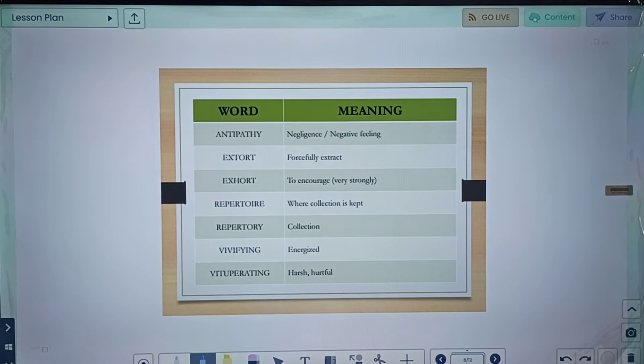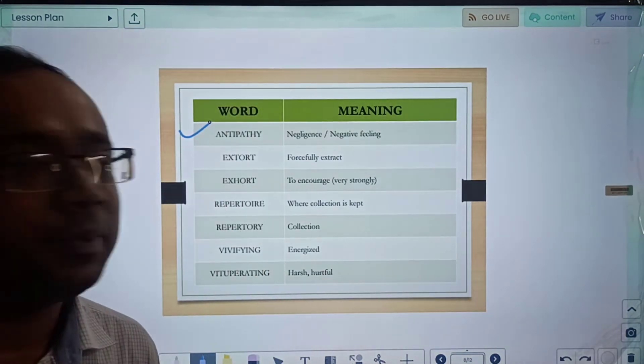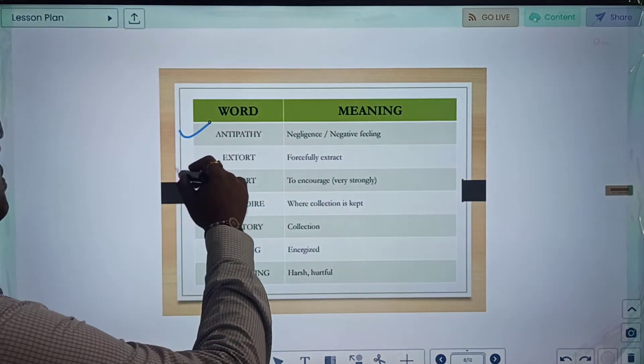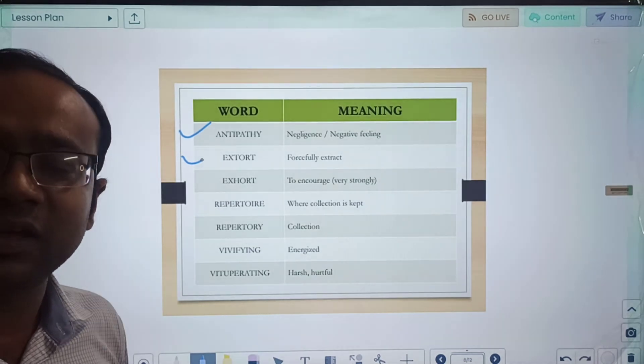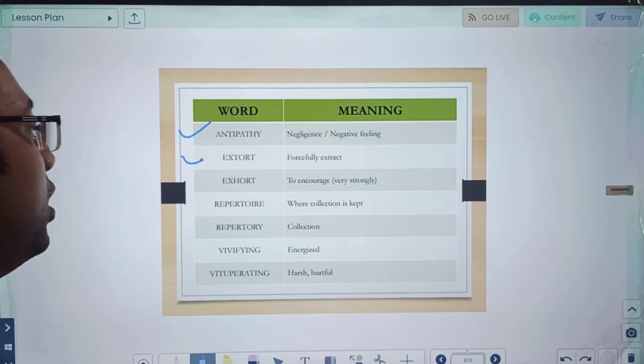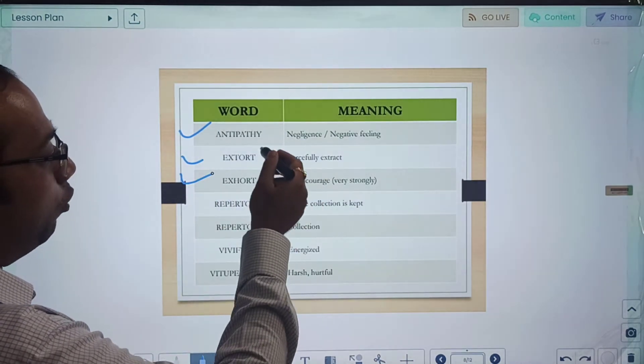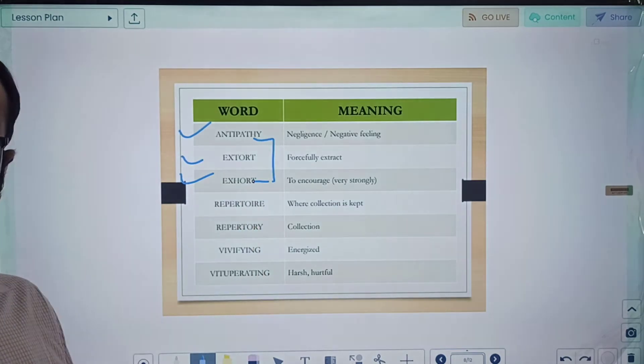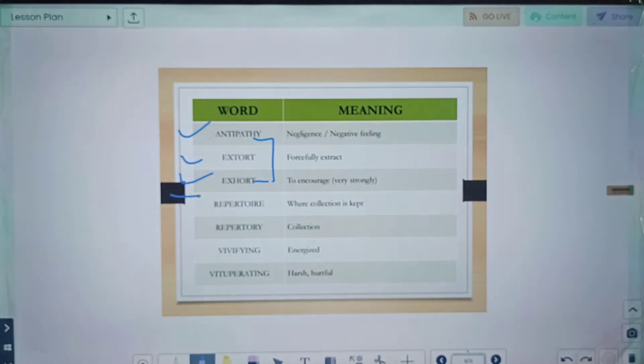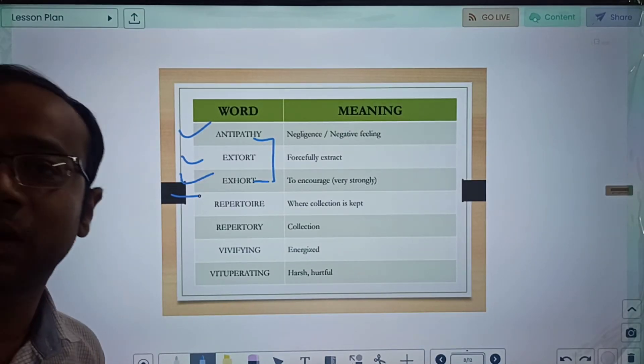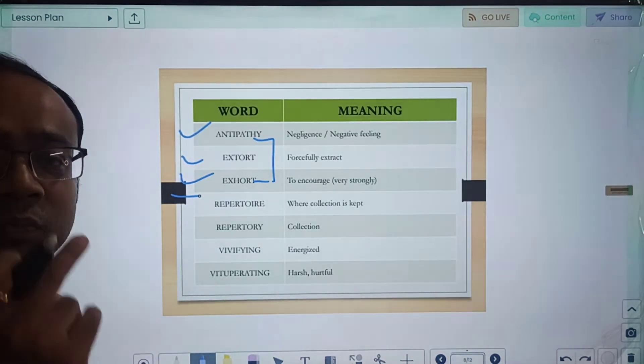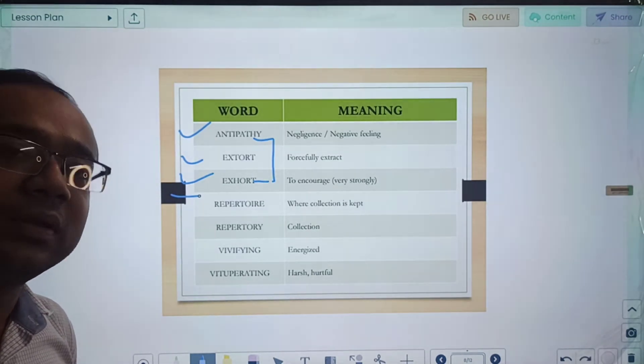Antipathy means negligence or a negative feeling for something or someone. Extort basically means forcefully extract, forcefully extracting something out of someone. Exhort means to encourage very strongly. Just see these are very near, extort and exhort, just a change of one alphabet but their meaning is completely different. Repertoire means where collection is kept. If I say repertoire of books, that is library because in library collection of books is there.